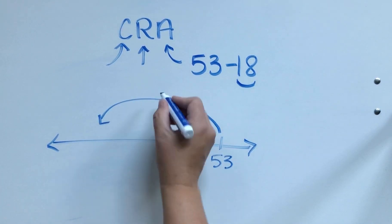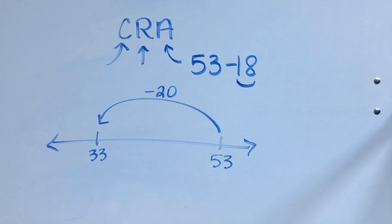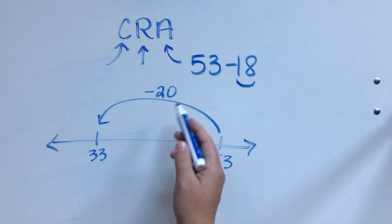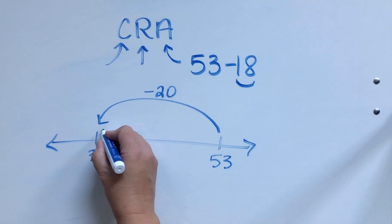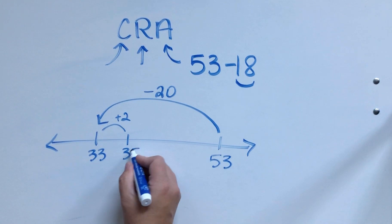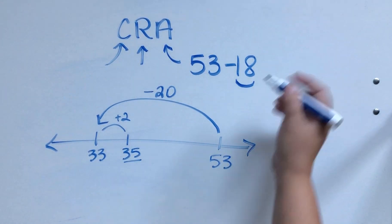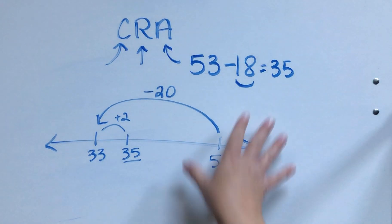And that will take us to 33. However, we weren't supposed to take away 20. We took away two extras, didn't we? Two too many. So now we have to add those two back, so we'll just add the two which gets us to 35. So 53 subtract 18 is 35.